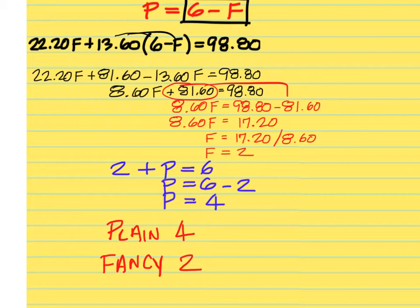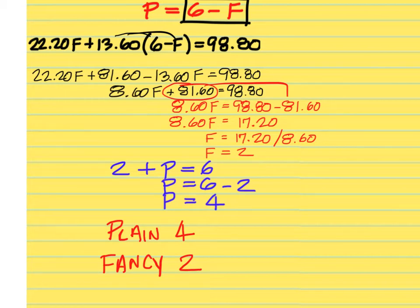You would express your final answer as: plain equals 4 and fancy equals 2. You must write out what the numbers are equivalent to, because if you start using variables like x, y, m, p, or q that have nothing to do with the items in the problem, there will be no way to tell what you've just solved for.